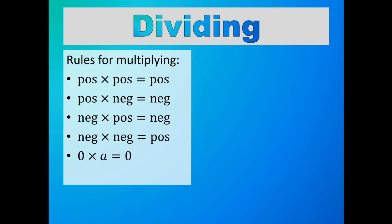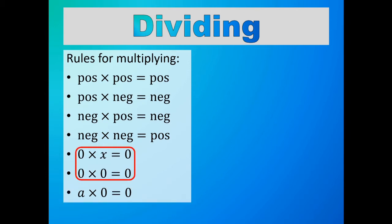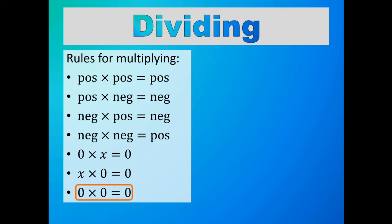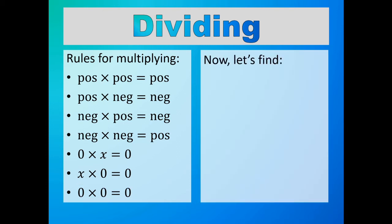Zero times any number is zero, and any number times zero is zero. In this set of videos, I'm going to be using a to talk about any number, and x to talk about any number but zero — so a could be zero while x could not. So let's change these equations: zero times x is equal to zero, and zero times zero is equal to zero. Likewise, x times zero is equal to zero and zero times zero is equal to zero. Since two equations are exactly the same, let's make them one equation in the list.